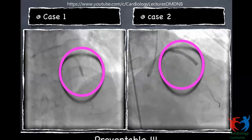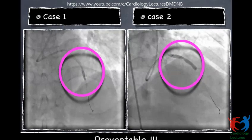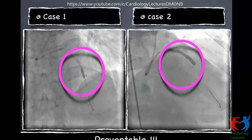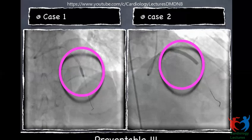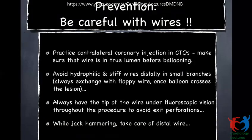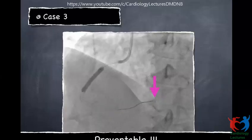Looking back at my first two cases — both were preventable. The first case: I should have used a non-compliant balloon for post-dilatation. The second case: it was an oversized stent that perforated the vessel. Regarding distal perforation prevention: always practice contralateral coronary injection in CTO interventions. Ensure the wire is in the true lumen before balloon dilatation. Avoid hydrophilic and stiff wires distally in small branches — always exchange with a floppy wire once the balloon crosses the lesion. Always keep the wire tip under fluoroscopic vision throughout the procedure. When jackhammering a balloon across a difficult lesion, always watch the distal wire.